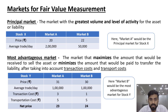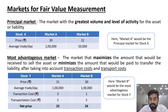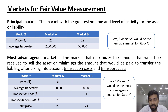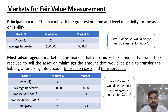Fair value measurement assumes the transaction takes place in the principal market, and in the absence of a principal market, the most advantageous market. The principal market is the one with the greatest volume or activity. For example, if stock X is traded in market A at 20 and in market B at 22, but the average trade per day in market A is higher, then market A is the principal market. Therefore, the fair value is 20, even though market B has a higher price.